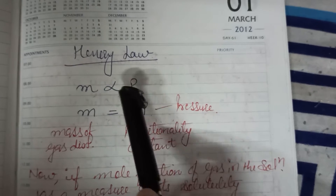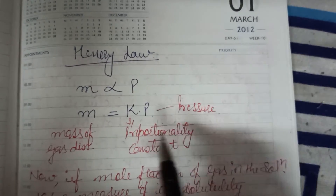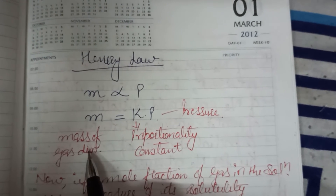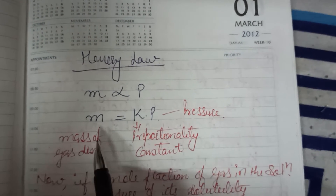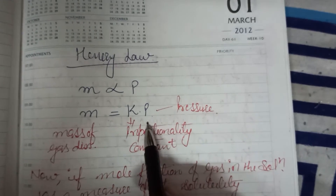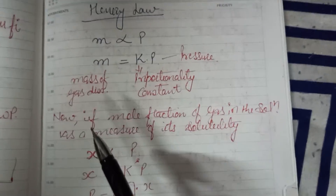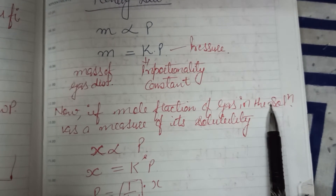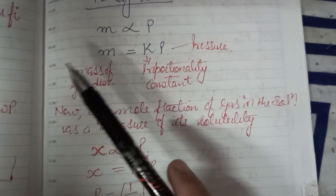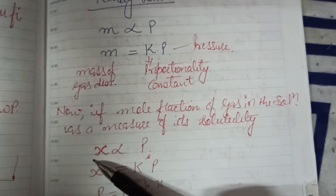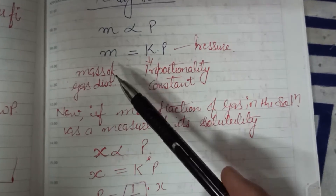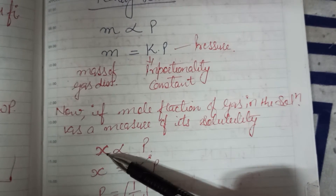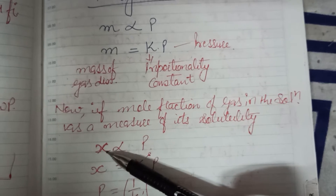When we have the sign of proportionality, the proportionality constant is k. Now, what is the mass of gas in solution as a measure of its solubility? We replace mass with the mole fraction, because the mole fraction is the measure of solubility.